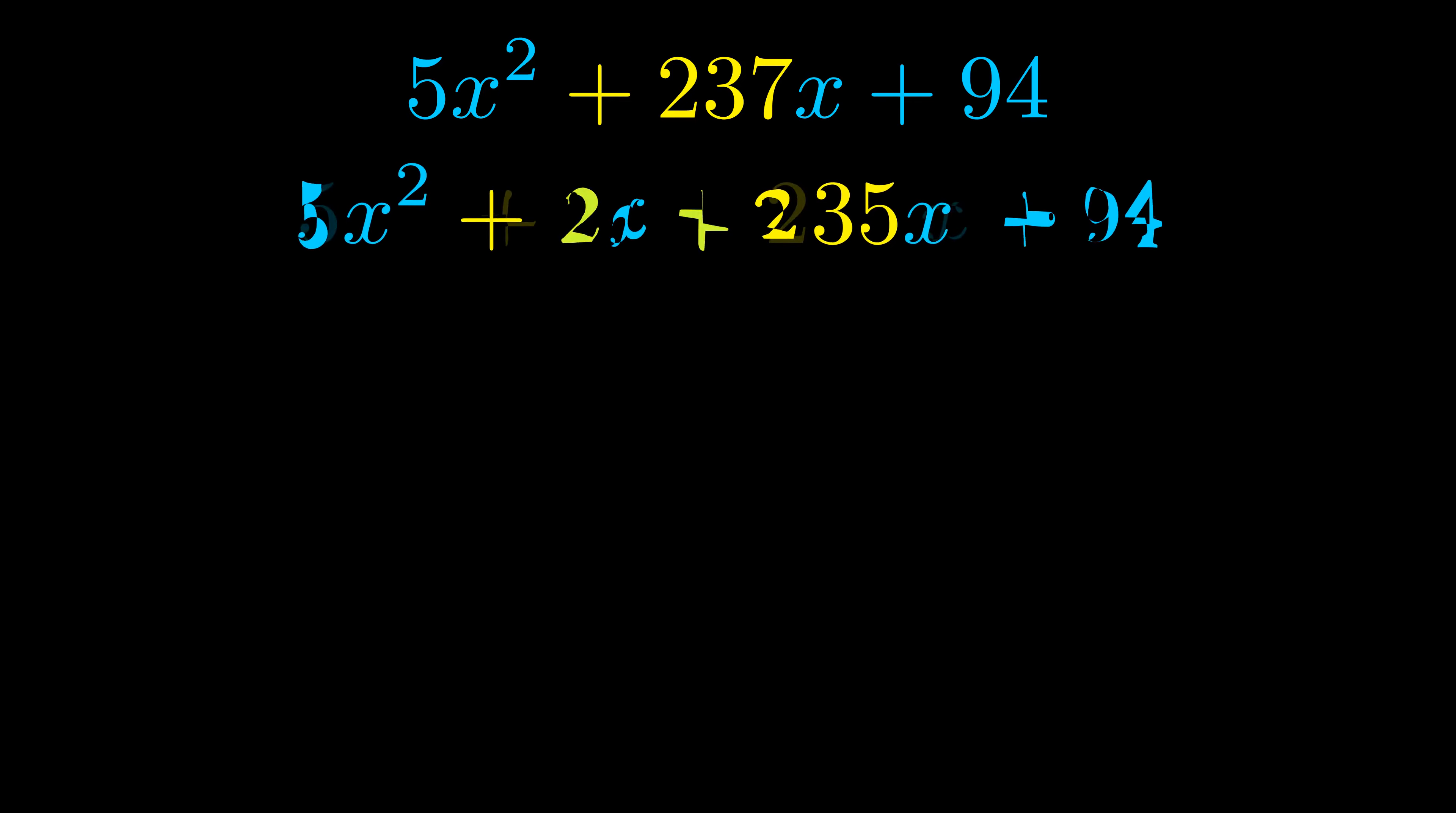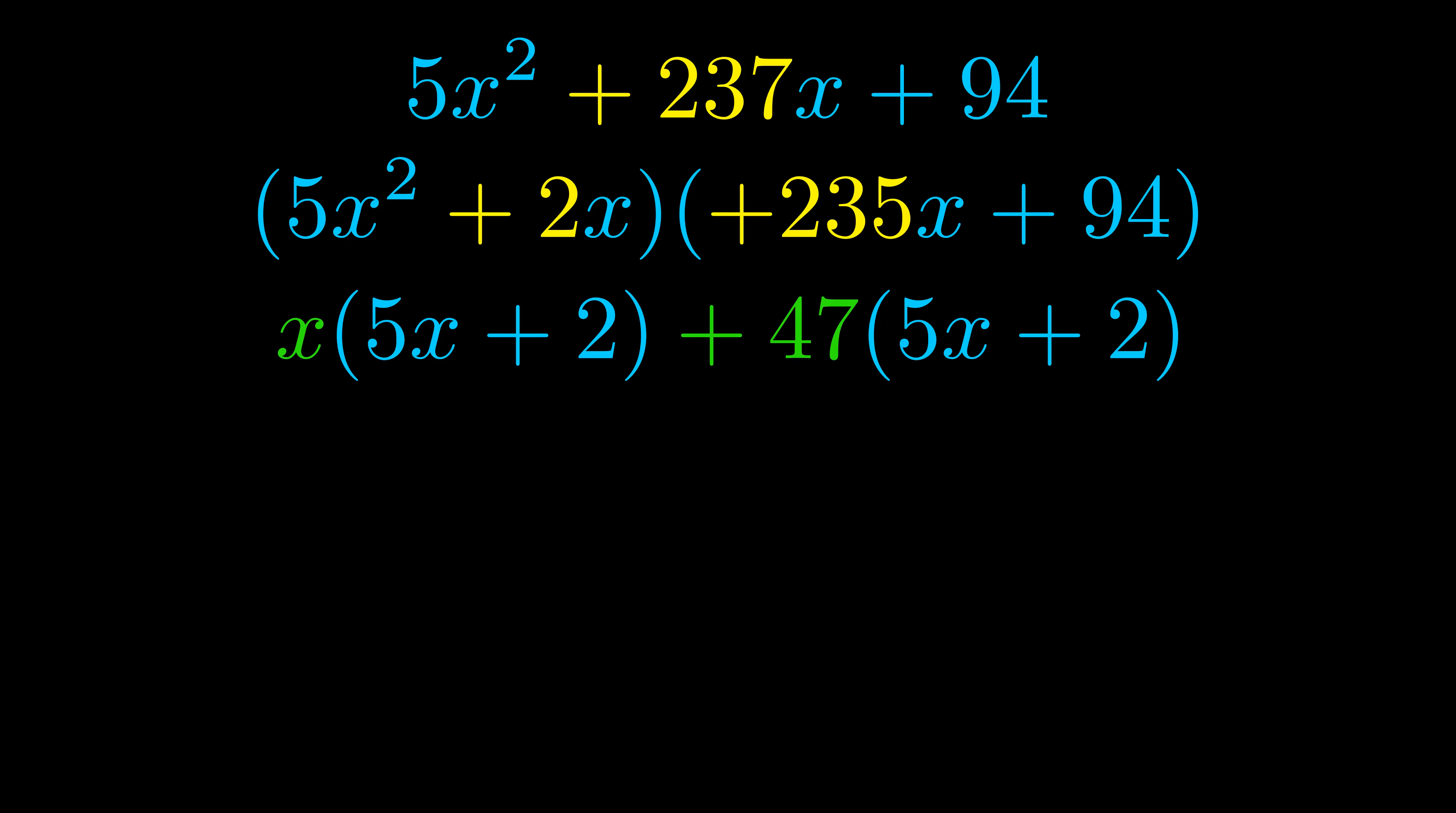Once we've done this, we go ahead and put parentheses around the first term and the last term. And we do that so that we can take the greatest common factor out of both terms. We can see the greatest common factor is now outside in green. Notice also how what remains inside of the parentheses is the same in both cases. The blue values are the same.